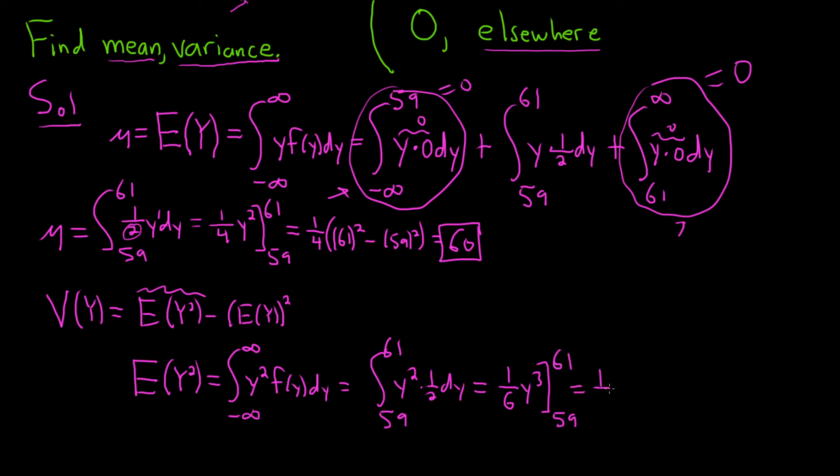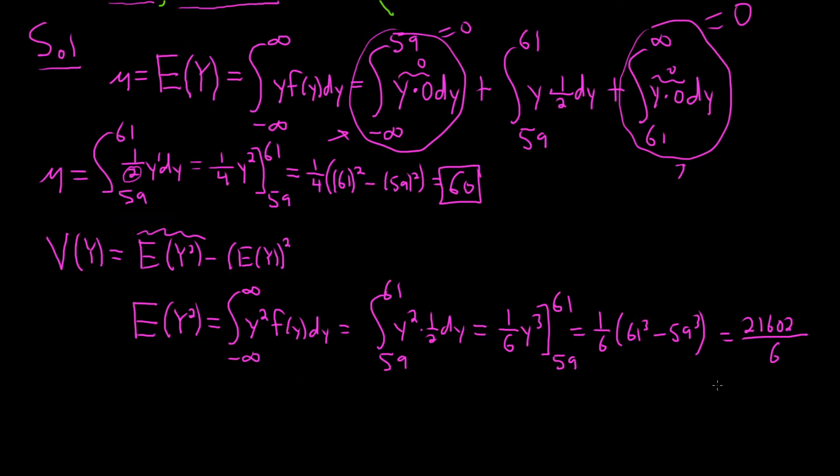So this is 1 sixth. Now we'll plug in the 61, so 61 cubed minus 59 cubed. Let's see, 61 cubed minus 59 cubed. Wow, big number, 21602. If we divide that by 6, let me just leave it like that. This is going to be 21602 divided by 6. Really big number. That's the expected value of y squared.